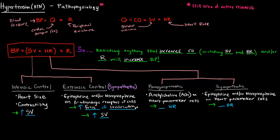Heart rate can be controlled parasympathetically and sympathetically. The parasympathetic nervous system is the rest-and-digest system and typically lowers heart rate, while sympathetic is fight-or-flight and increases heart rate. Acetylcholine is involved in the parasympathetic side, while epinephrine and norepinephrine increase heart rate on the sympathetic side. Changing these values changes blood pressure.